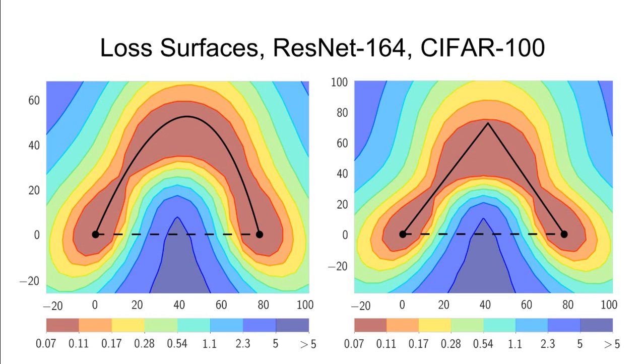There exist paths of near-constant loss and error between the local minima found by SGD from different random initializations. These paths can be very simple, such as a polygonal chain with one bend. Next, I will describe our method to find these paths.